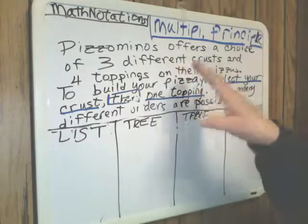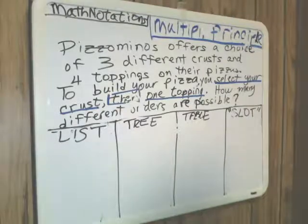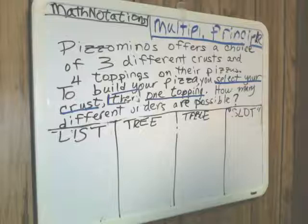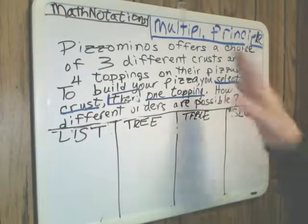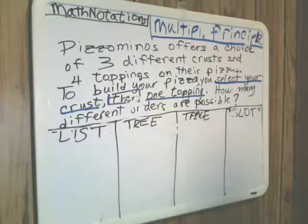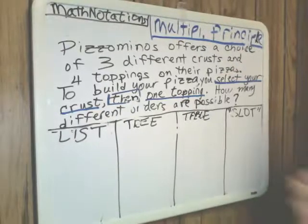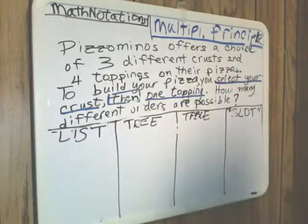This is a standard problem you see in upper elementary textbooks, middle school, and would be a very simple exercise for the high school student. There are more sophisticated versions of this pizza problem for eighth graders and high school students taking standardized tests, including SATs. The restaurant is offering three different crusts you can select from, and after you pick a crust, you choose one topping. I emphasize that there's a sequence or an order to this — first, you choose your crust, followed by a topping.